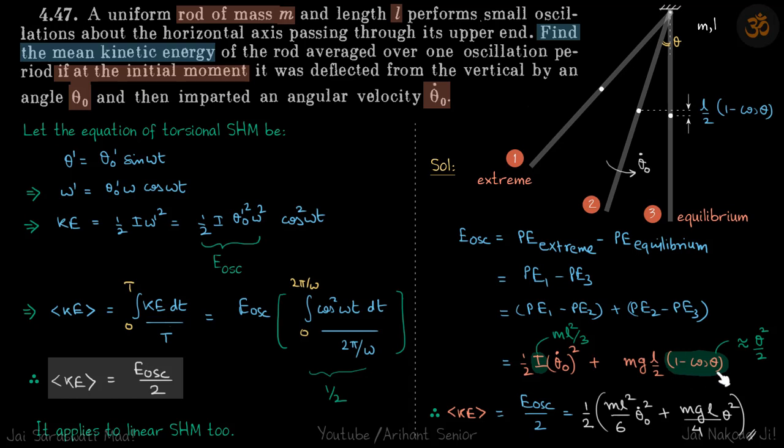So we put that here. So 1 - cos θ can be approximated to θ²/2, and I of the body about this point is mL²/3. So you put these values here, you'll get the kinetic energy of the oscillation. Average kinetic energy is energy of oscillation by 2, which will be our answer.